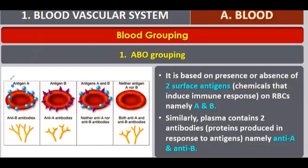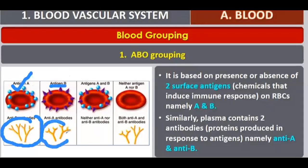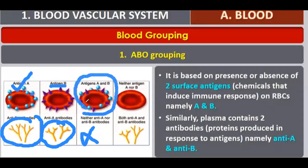This is antigen A on RBCs. For blood group A, antigen A is present on RBCs and B antibodies are present in plasma. For antigen B blood group, there is no antigen A, and plasma has B antibodies with RBCs having A antigen. This is the AB blood group — it is not present in any type of plasma antibody. RBCs have both antigen A and antigen B on the surface.